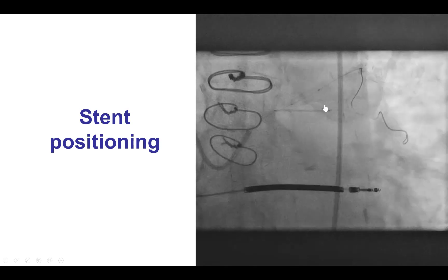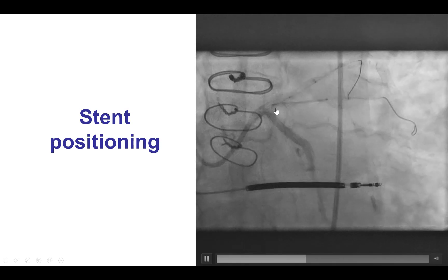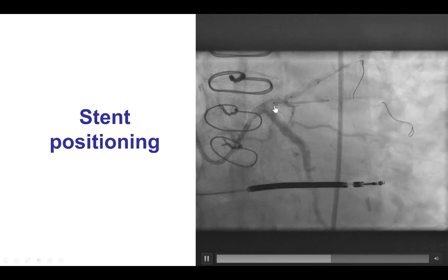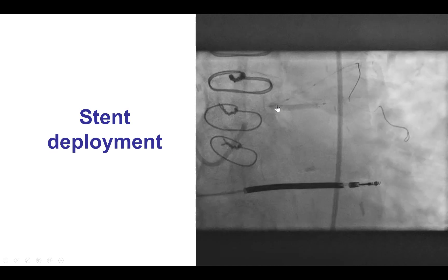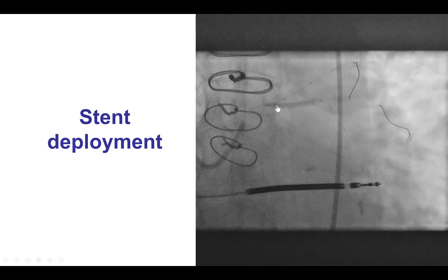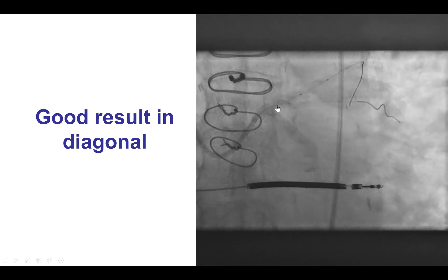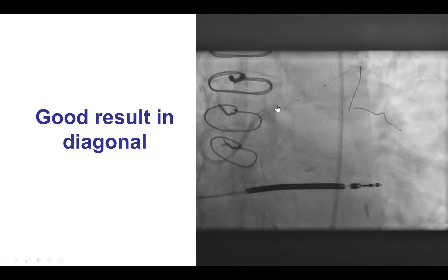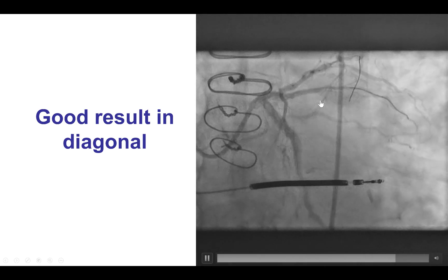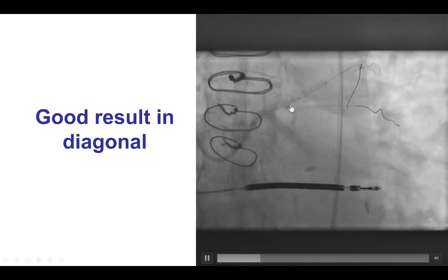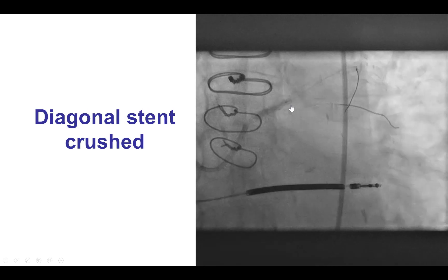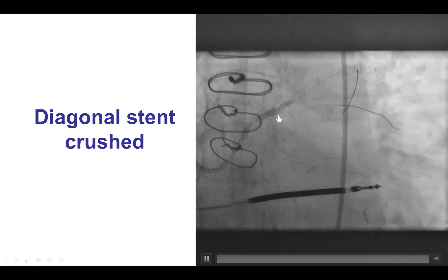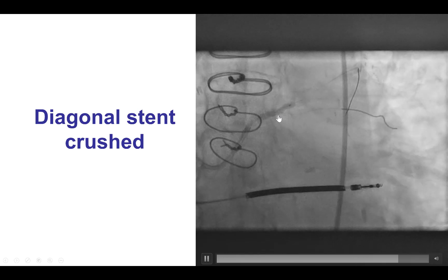We confirmed that we had two to three millimeters of stent protruding into the proximal LAD, and then the diagonal stent was deployed. Before doing anything else, we confirmed that the diagonal looked good — no distal dissection, the stent was well expanded — and then we crushed the stent with the balloon we had in the LAD.